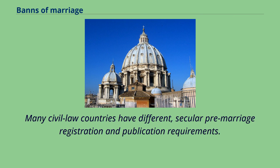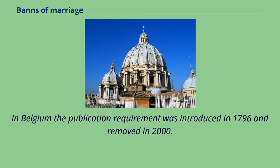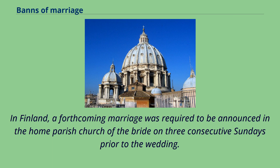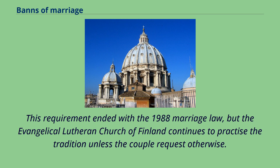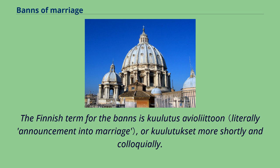Many civil law countries have different secular pre-marriage registration and publication requirements. In Belgium the publication requirement was introduced in 1796 and removed in 2000. In Finland, a forthcoming marriage was required to be announced in the home parish church of the bride on three consecutive Sundays prior to the wedding. This requirement ended with the 1988 marriage law, but the Evangelical Lutheran Church of Finland continues to practice the tradition unless the couple request otherwise. The Finnish term for the banns is kuulutus avioliittoon, or kuulutukset more colloquially.